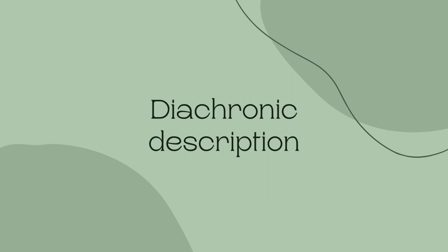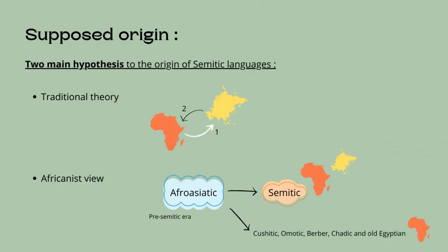Now onto a diachronic description of Ge'ez. The origin of Semitic languages is not well known, and there are two main hypotheses: the Africanist view and the traditional theory. The traditional theory believes that some speakers migrated from Africa to Asia, where the language developed distinct features forming Proto-Semitic, and then some speakers migrated again from South Arabia to Northern Ethiopia and moved further south. The Africanist view, on the contrary, states that the origin of Ethio-Semitic languages is Africa — specifically that Ethio-Semitic is a descendant of the Afro-Asiatic language spoken in Africa in the pre-Semitic era, before the expansion of Semitic languages across Asia and North Africa.